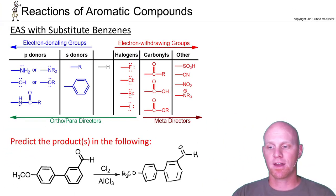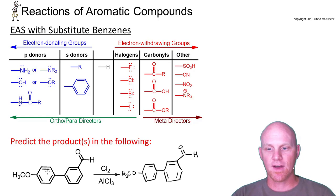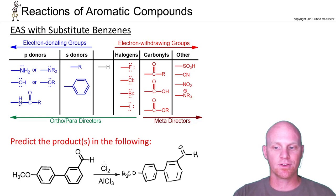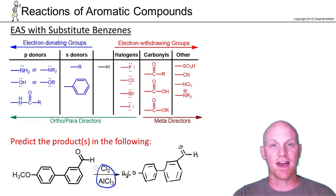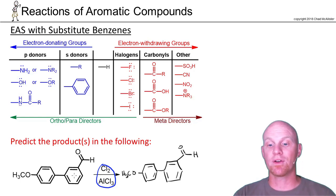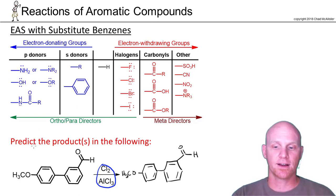This next example is a classic example for predicting products. You've got two benzene rings, and one mistake students make is assuming we're going to do the EAS reaction twice. We're not — Cl2/AlCl3 is going to add one chlorine in place of a hydrogen, so substitution, and you're only going to do it once. That means you've got to choose one ring or the other — whichever one is more reactive.